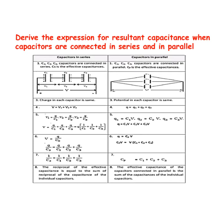The total charge in the system of capacitors is Q equal to Q1 plus Q2 plus Q3. Therefore Q is equal to C1V plus C2V plus C3V. We know Q is equal to CpV, where Cp is the effective capacitance of the system. Therefore CpV is equal to V into (C1 plus C2 plus C3), so Cp is equal to C1 plus C2 plus C3.